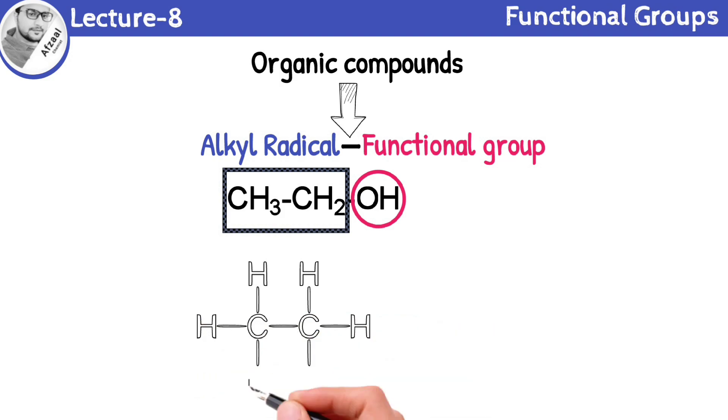Alkyl radicals are derivatives of alkanes. They are formed by the removal of one of the hydrogen atoms of an alkane. Both alkyl radical and functional group combine to form organic compound.